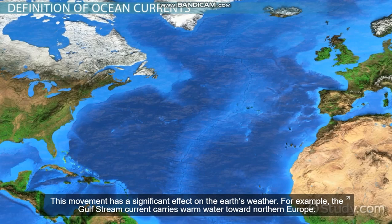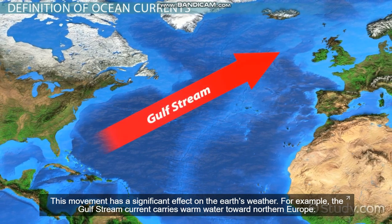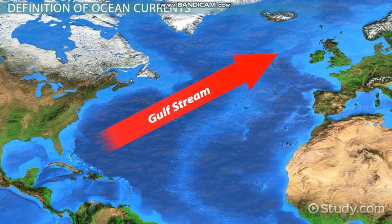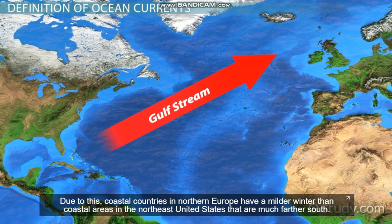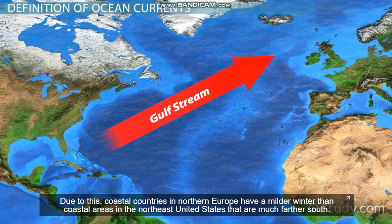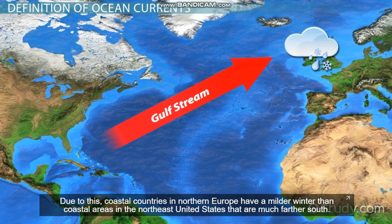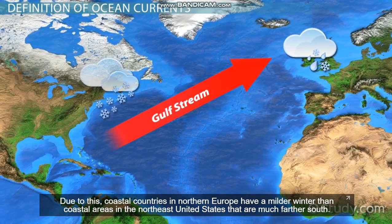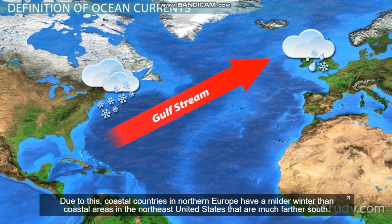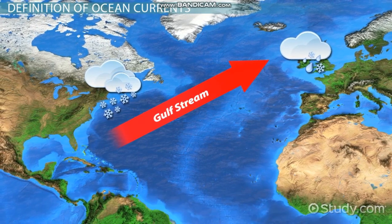For example, the Gulf Stream current carries warm water toward northern Europe. Due to this, coastal countries in northern Europe have a milder winter than coastal areas in the northeast United States that are much farther south.